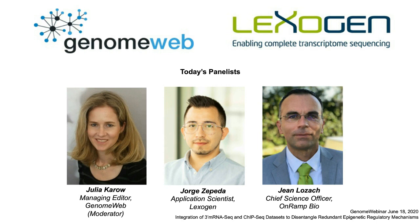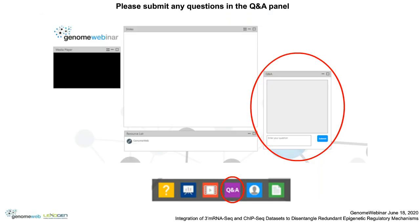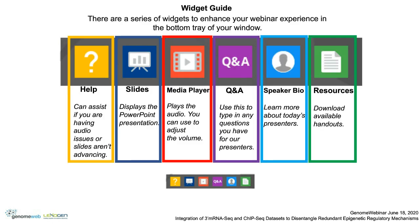You may type in a question at any time during the webinar through the Q&A panel, which usually appears on the right side of your webinar presentation. We will ask our speakers their questions after the presentations have concluded. Also, if you look at the bottom tray of your window, you will see a series of widgets to enhance your webinar experience. So with that, let me turn it over to Jorge.